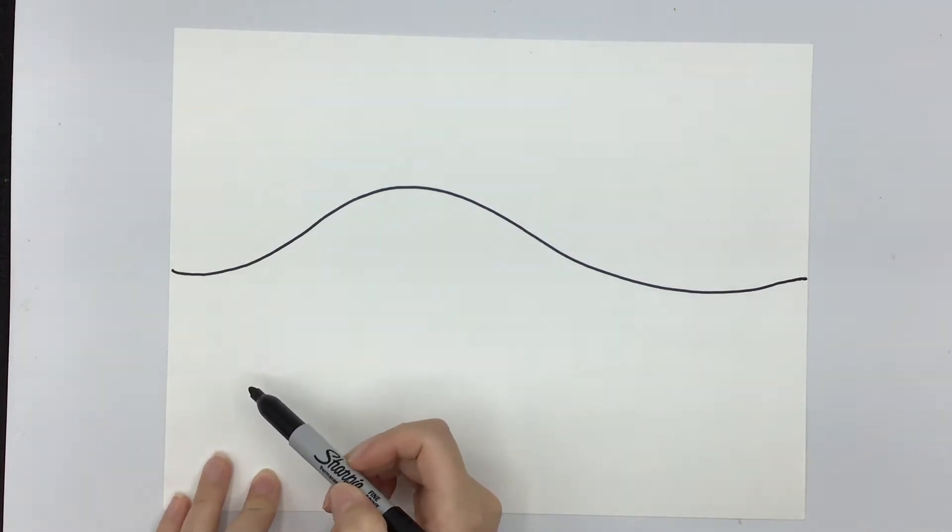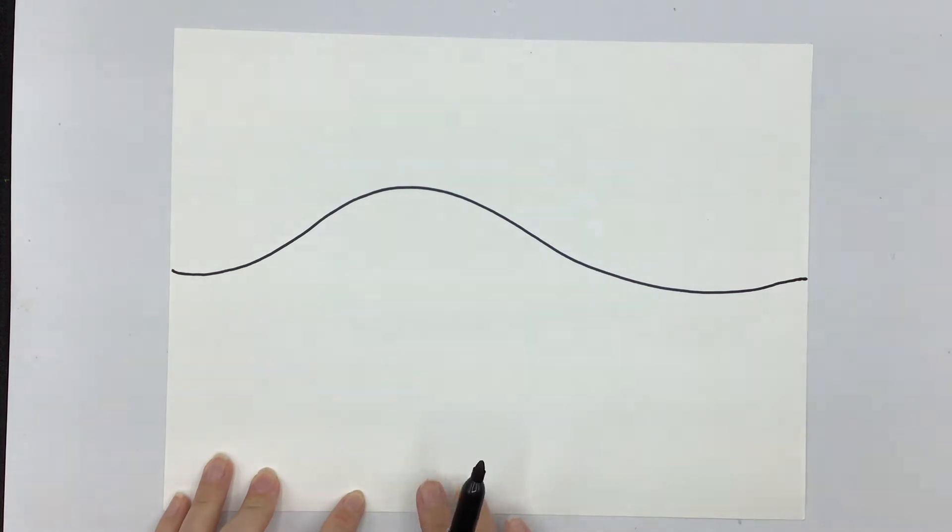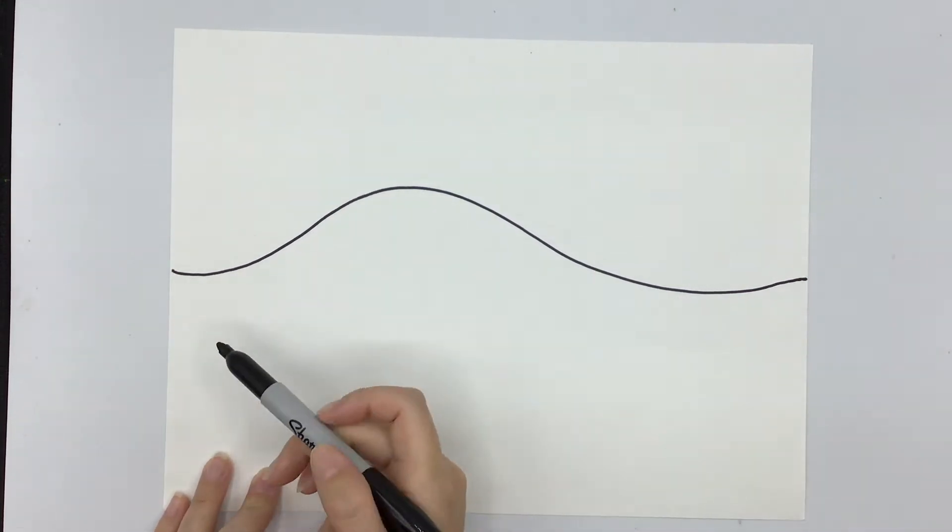Underneath that wavy line I want to make another one, not too close to the bottom. I'm going to make it right under this one.